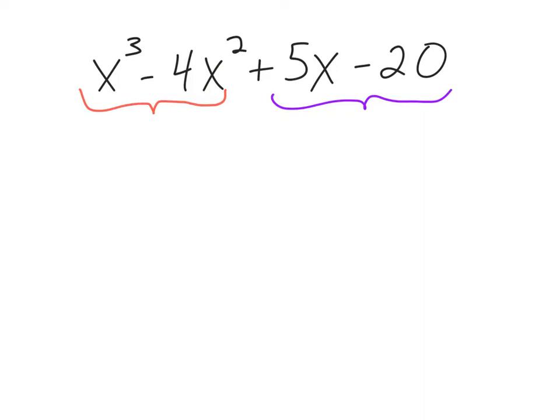If I look at that red group, I'm going to go ahead and pull out an x squared, because that's in common with both of them. x squared times x gets me back to x cubed, and then x squared times negative four gets me to that second term of negative four x squared.